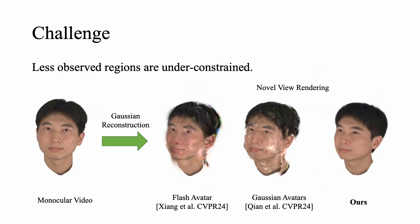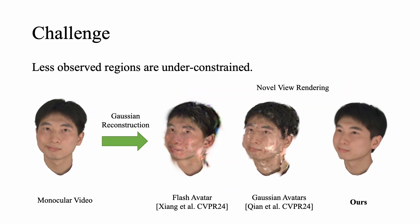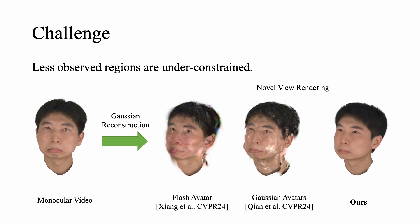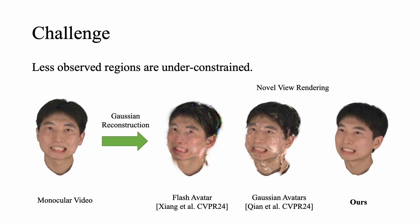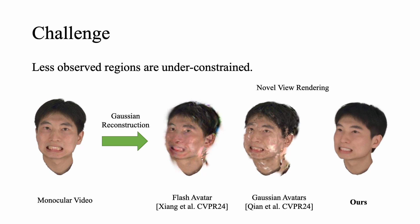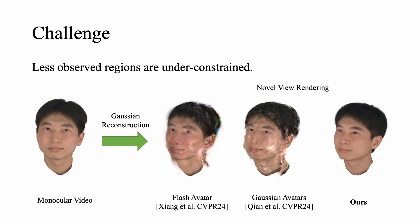State-of-the-art Gaussian reconstruction methods such as Flash Avatar and Gaussian Avatars achieve real-time rendering with fine-grained details by optimizing 3D head Gaussians. However, when applied to monocular videos, less observed regions are always under-constrained and often result in noticeable artifacts in novel view renderings.